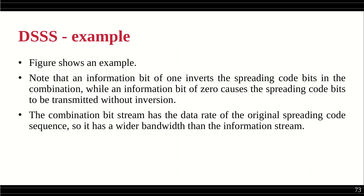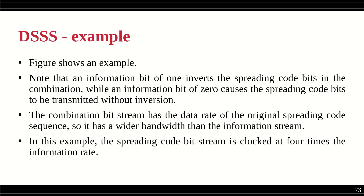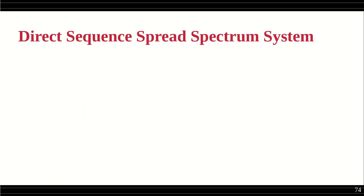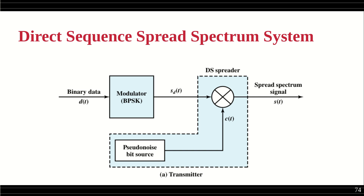The spreading code bit stream is clocked at four times the information rate — the frequency gets four times greater and the time period becomes one-fourth of the original. This binary data is given to a modulator — it can be any binary modulator. In a particular example, binary phase shift keying (BPSK) is used, and the modulated analog signal is generated.